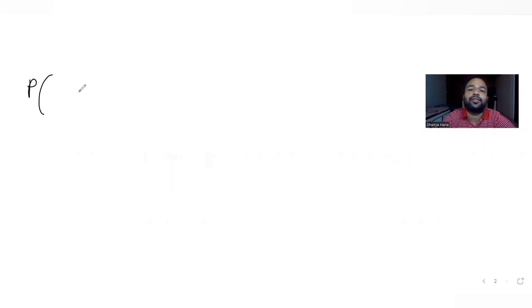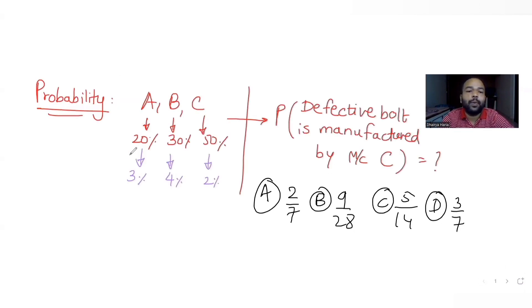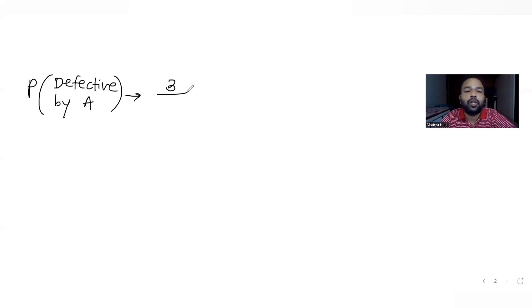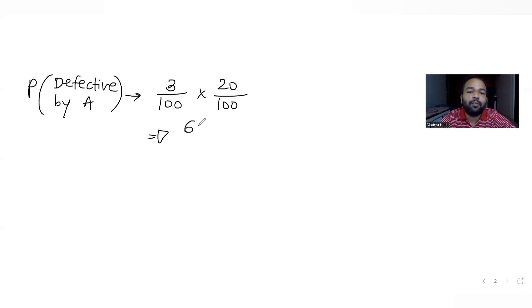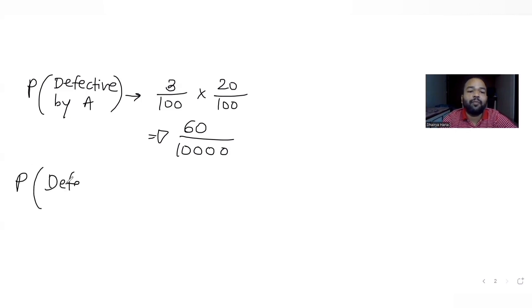Let's first calculate the probability of a bolt which is picked being defective. Machine A produces 20% of total bolts and out of that 3% are defective — so 3% of 20% of the total bolts. The probability of machine A manufacturing a defective bolt is 60/10,000.